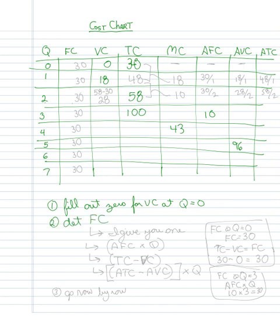Then you want to determine your fixed costs because once you know one number in this column, you know them all. Now the ways to get your fixed costs would include, well, it could be really easy. I'd give you one.